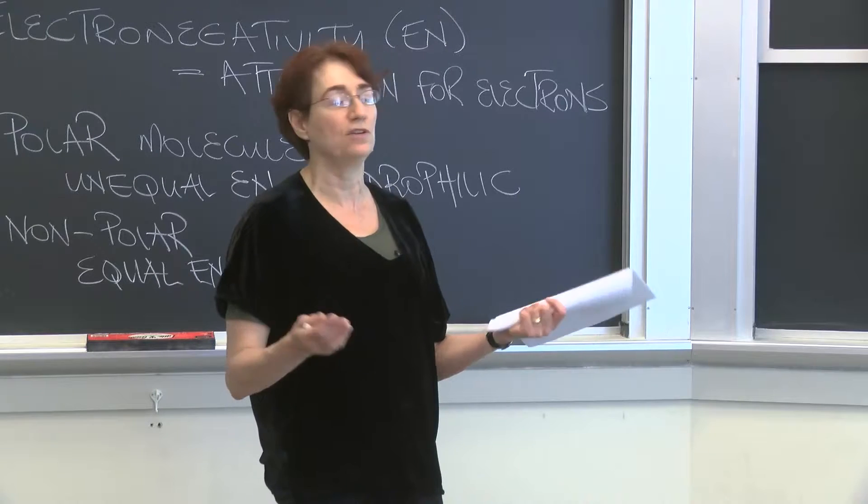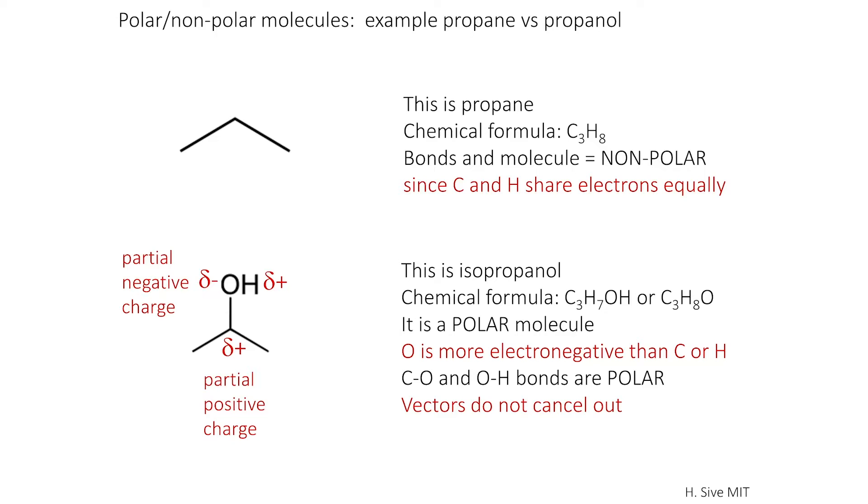There is an equal distribution of electrons throughout the molecule. On the other hand, isopropanol has a hydroxyl group added to it, and there is that oxygen, which is highly electronegative.